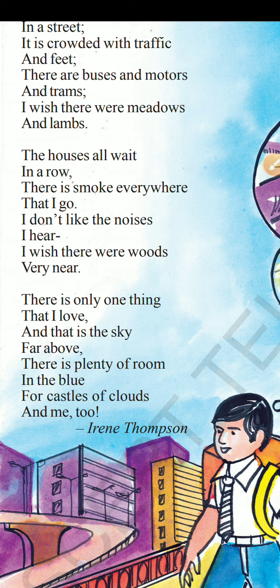The houses all wait in a row — everyone knows that in a town the houses in the street will be arranged in a particular row. 'There is smoke everywhere that I go' — whenever he goes, smoke will follow. Because of the motors, buses, and trams discussed in the first stanza, these vehicles produce smoke, so there is smoke everywhere.